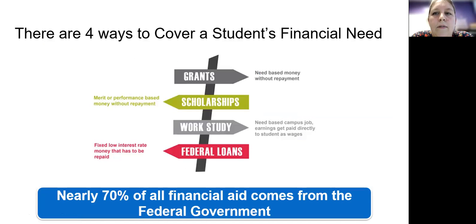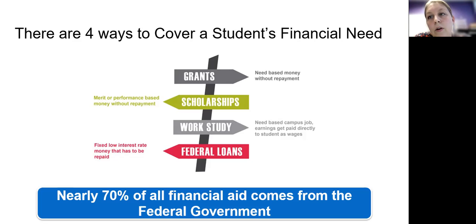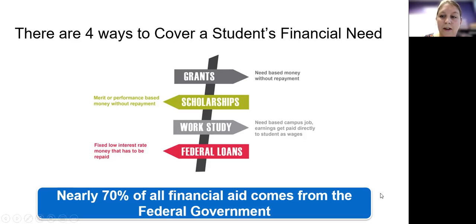There are four ways to cover a student's financial need. 70% of all financial aid comes from the federal government in the form of grants, work study, and federal student loans. There are also scholarships, which can be merit- or performance-based or need-based, and they can come directly from the school or from other programs and opportunities in your community, or from brands and organizations that want to help students go to college.